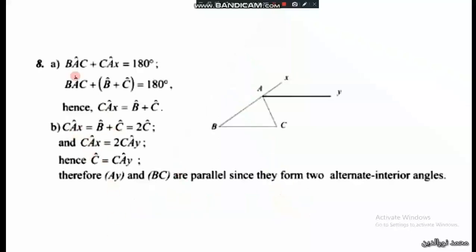Now going back to part one, where we need to prove that angle CAX equals the sum of B plus C. We have angle BAC plus angle CAX equals 180 because they are supplementary or forming a straight angle.